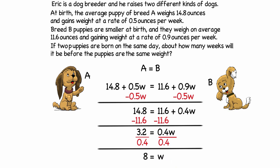So puppy A and B should be about the same weight in 8 weeks.